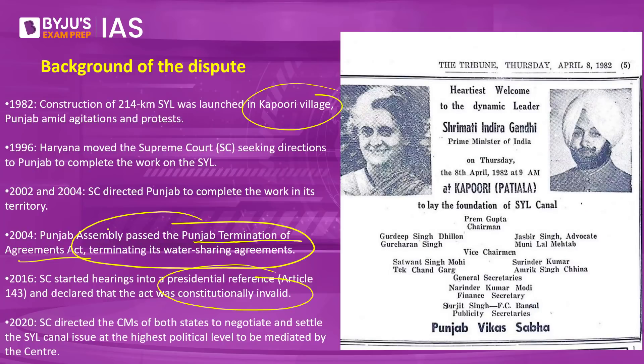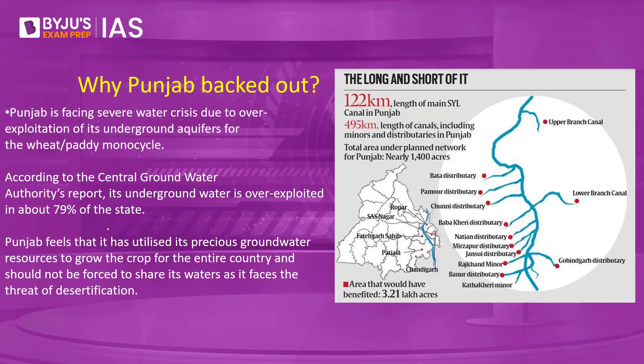Punjab's major concern is a severe water crisis caused by over-exploitation of groundwater, driven largely by the choice of crops — predominantly wheat and paddy, both water-intensive. A report by the Central Groundwater Authority states that 79% of Punjab is over-exploiting its underground water. Punjab is fast moving towards desertification — a real threat for a state historically called India's evergreen state — and therefore does not want to risk giving away its precious water resources to Haryana.